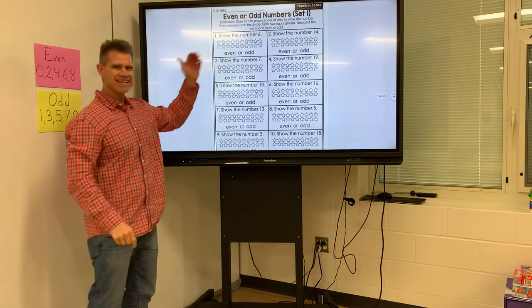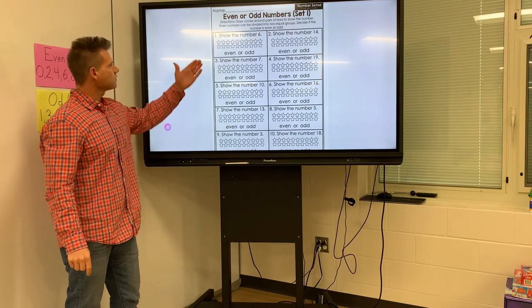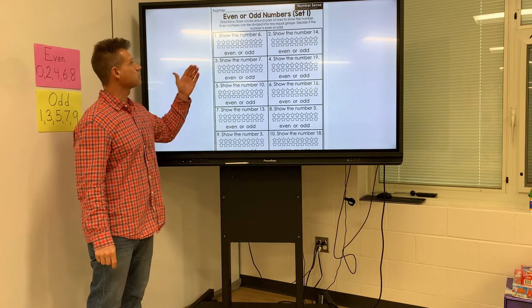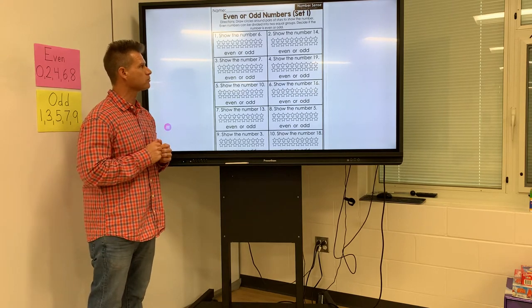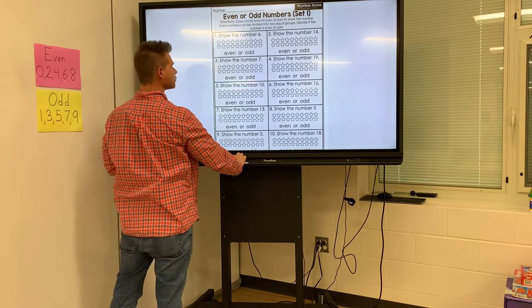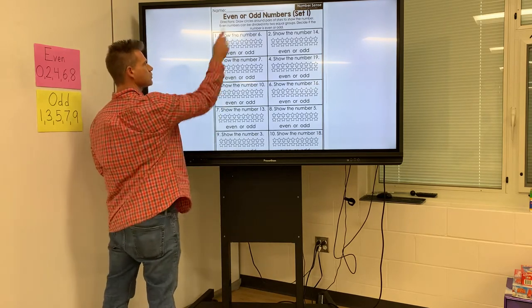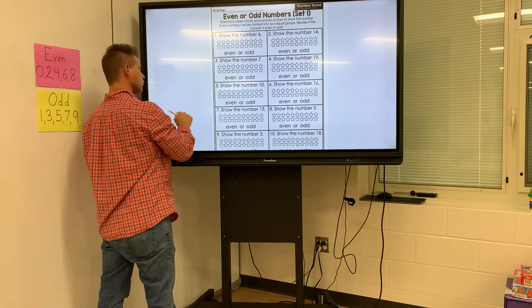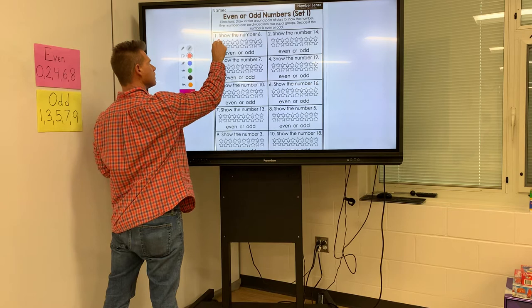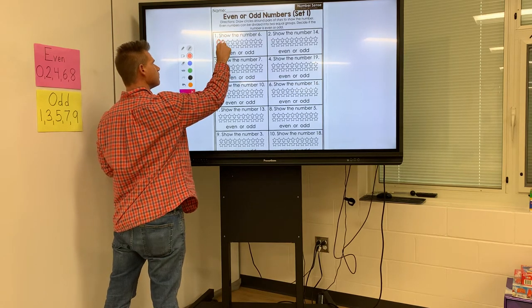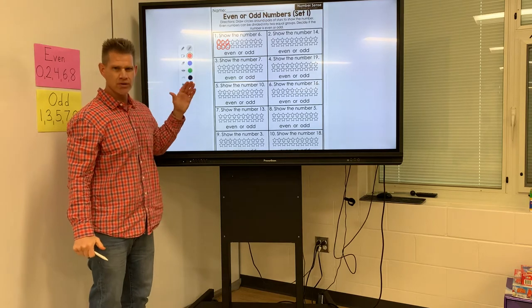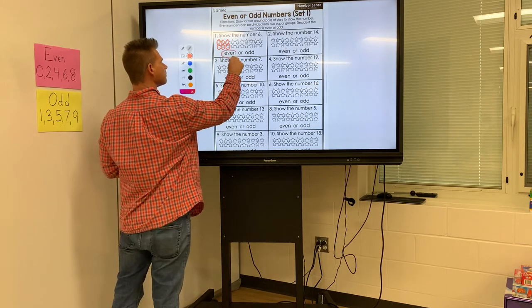The next page is about even and odd numbers. The directions say to draw circles around the pairs of stars to show the number. Even numbers can be divided into two equal groups. Decide if the number is even or odd. For the first one, it says show the number six. I'm going to draw circles around six of the stars — one, two, three, four, five, six. They all have a partner or a buddy, which means it's an even number.